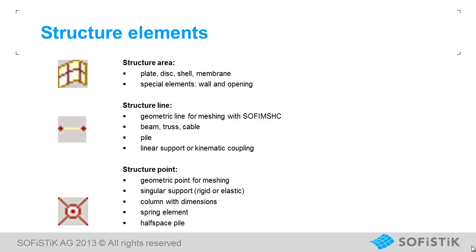For modeling a system, you can use structure elements to define the geometry. Structure elements represent the points, edges, and surfaces of the building. Thus, there are three basic types of structure elements: areas, lines, and points. Here are some examples of building elements next to the corresponding structure elements. The finite element mesh will be generated automatically by the program.